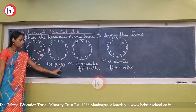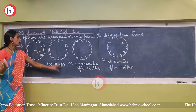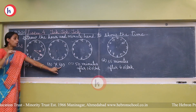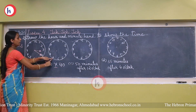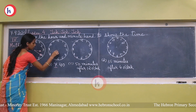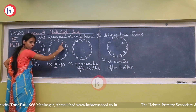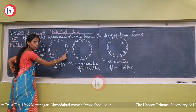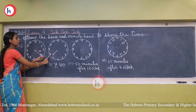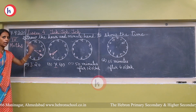Next: 7:40. The hour hand will be between 7 and 8 because 40 minutes have also passed. For the minute hand — count: 5 for 5, 5 for 10, 5 for 15, 5 for 20, 5 for 25, 5 for 30, 5 for 35, 5 for 40 — so the minute hand will be on 8. That is how we show 7:40 on the clock.